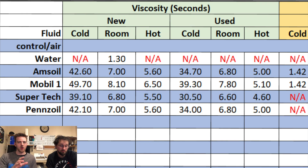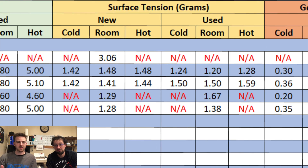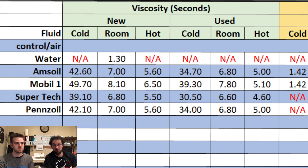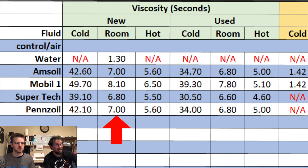We're going to first talk about viscosities and their correlations to our engine test failure numbers — how viscosity affects end results, surface tension, gear transfer, and oil retention. To refresh everybody: viscosity is how a fluid flows, its thickness and its properties while flowing. If we look at the viscosity at room temperature, the numbers we measured are a time in seconds — not the actual viscosity number itself, but the time used to calculate viscosity.